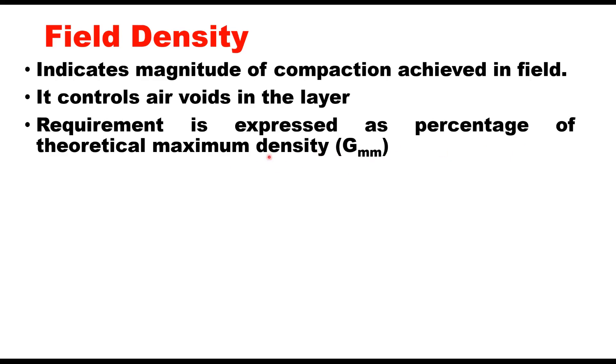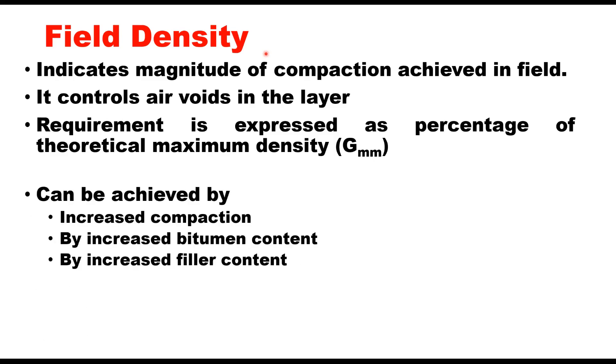Theoretical maximum density is expressed as GMM, whereas bulk density or field density is expressed as GMB. Field density can be achieved either by increased compaction or by increased bituminous content in the mix or by increasing the filler content.